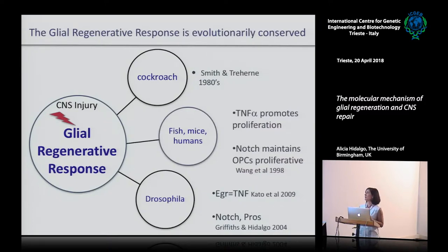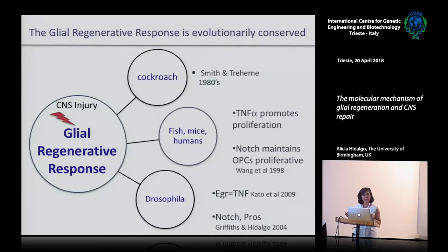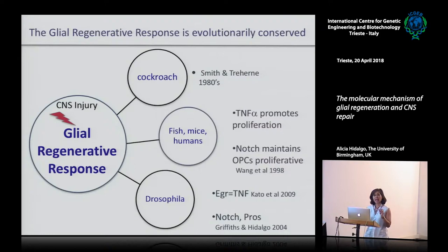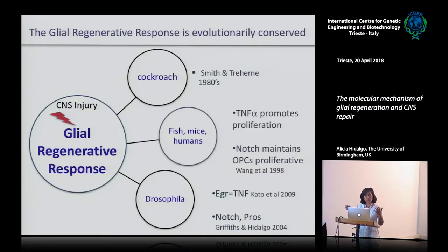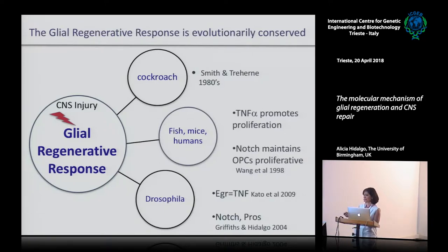After Rachel's observation, Kentaro Cato contacted me. He had done a post-doc with Keito and they had done injuries in the adult brain where they found that stabbing injury in the adult brain induced glial proliferation, and that response depended on the TNF pathway. This was another evidence that the regenerative response was evolutionarily conserved in Drosophila - not only in the embryo where Notch and Prospero were involved, but Kentaro had also seen something similar in the adult brain involving TNF.